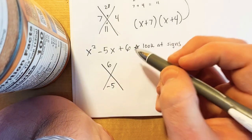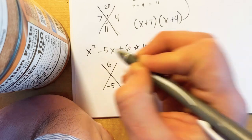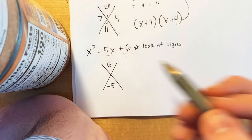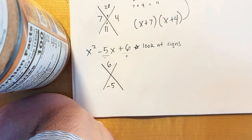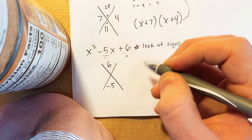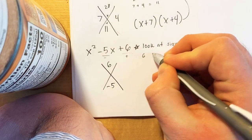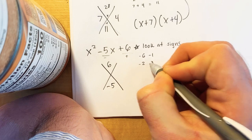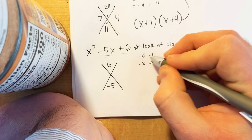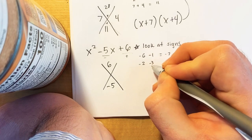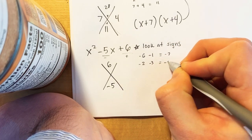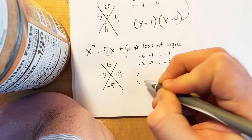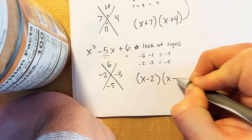Interestingly, the top is positive but the middle is negative. I know that a negative times a negative makes a positive, so both of my answers should be negative. From the factors of 6 — which are 6 and 1, or 2 and 3 — I put both as negative. Negative 6 plus negative 1 is negative 7, but negative 2 plus negative 3 is negative 5. So that's our answer: negative 2 and negative 3. The answer is x minus 2, x minus 3.